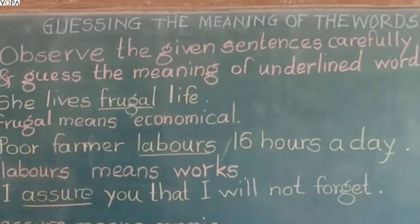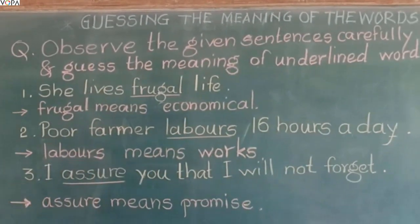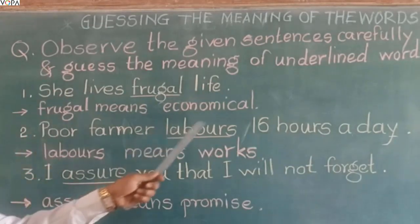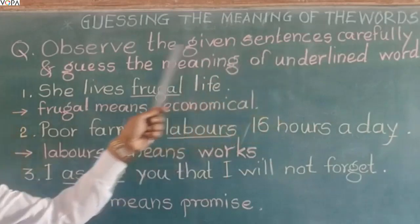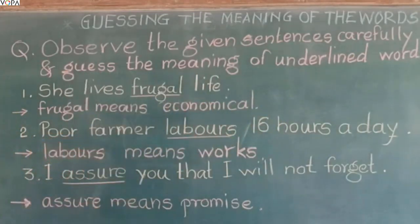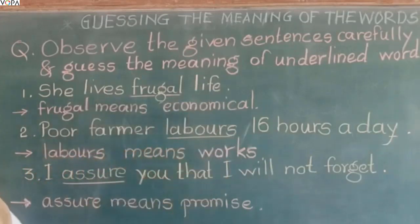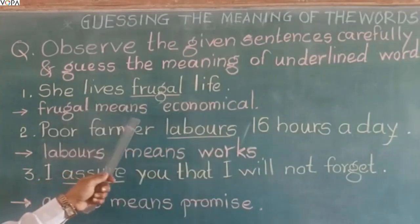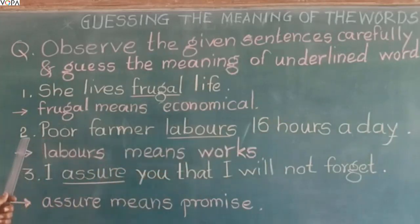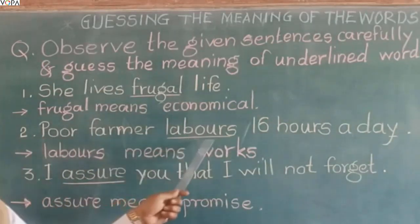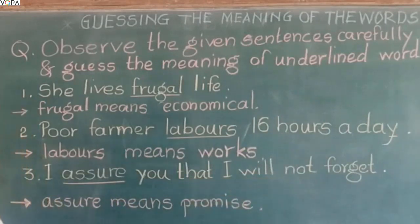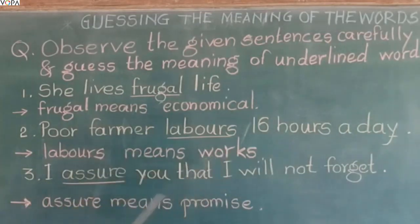Students, we are going to see the 'guessing the meaning of words' question. Observe the given sentence carefully and guess the meaning of the underlined word. Example number one: she lives a fragile life — fragile means economical. Example number two: poor farmer labors 16 hours a day — in this sentence, labors means works.